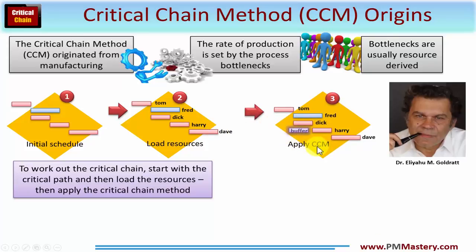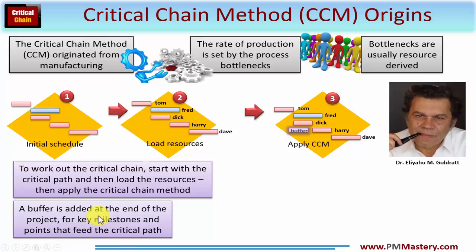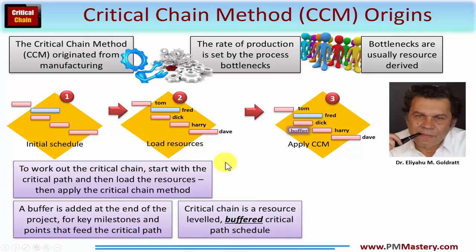Step three is to apply the critical chain method, which I'll explain very shortly. What you'll discover is that a buffer is added at the end of the project, and there's a buffer for any key milestones and key points that feed the critical path. Put at its simplest, critical chain is a resource-leveled, buffered critical path schedule. If you're fairly familiar with resource leveling, you'll see that apart from the use of the word buffer, there isn't much different in creating a Gantt chart with loaded and leveled resources.